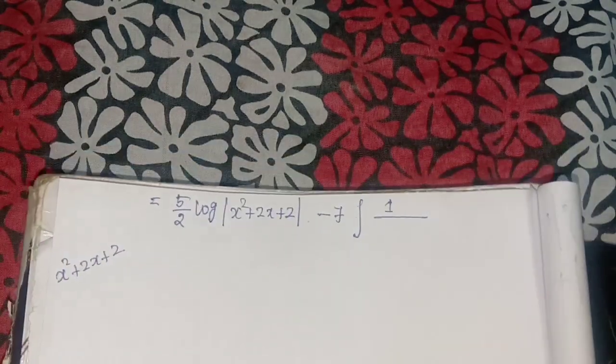Here x is replaced by (x plus 1) and a equals 1. Substituting into the formula, the final answer is: (5/2) times log modulus (x squared plus 2x plus 2) minus 7 times (1/1) times tan inverse of (x plus 1)/1 plus C, which simplifies to (5/2) log|x squared plus 2x plus 2| minus 7 tan inverse (x plus 1) plus C.